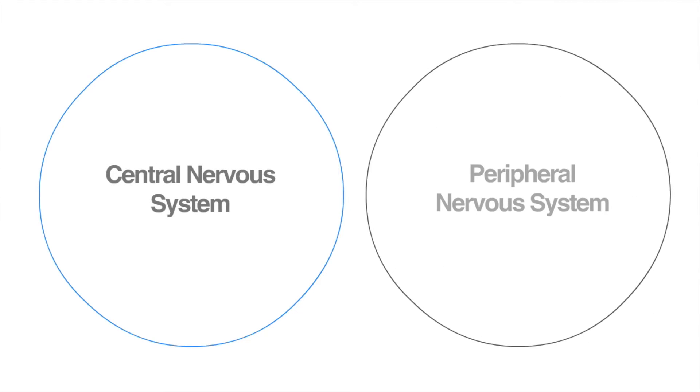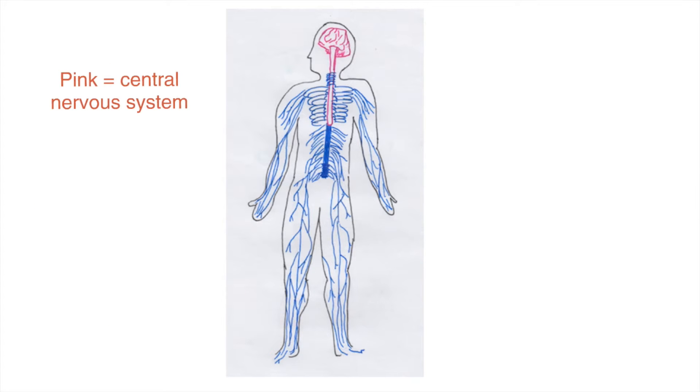We can consider the nervous system in two main sections: the central nervous system and the peripheral nervous system. The central nervous system includes the brain and the spinal cord and is where all the information gets processed. The peripheral nervous system includes all the neurons found outside the central nervous system, including sensory neurons and motor neurons.